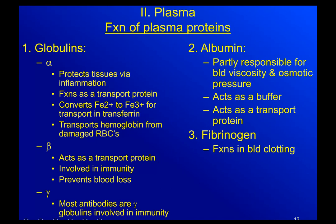The plasma proteins include globulins, albumins, and fibrinogen. Fibrinogen's name gives it away — it functions in blood clotting. It helps make the fibers involved in forming clots when we start to bleed. Albumin — imagine raw egg whites for the texture of purified albumin.